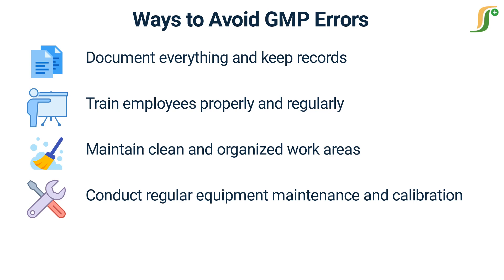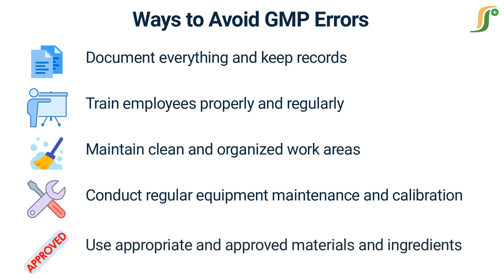Use appropriate and approved materials and ingredients. Using appropriate and approved materials and ingredients is essential for ensuring product quality and safety. This includes sourcing materials from reputable suppliers, checking for expiration dates and lot numbers, and conducting tests and inspections to ensure that materials meet specifications.